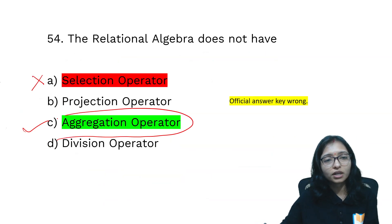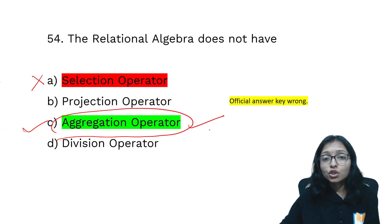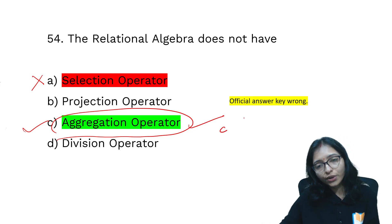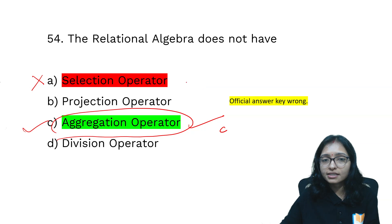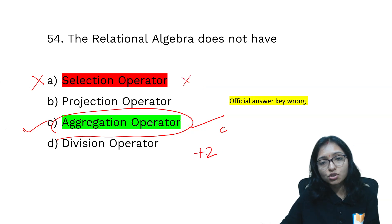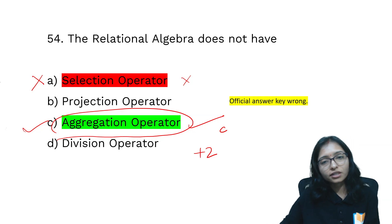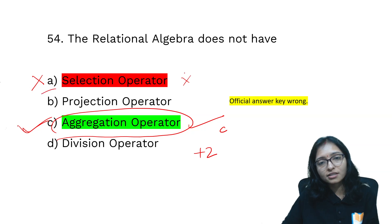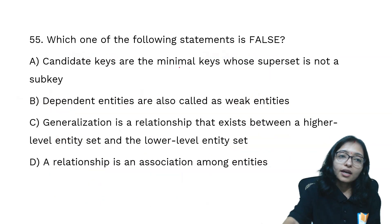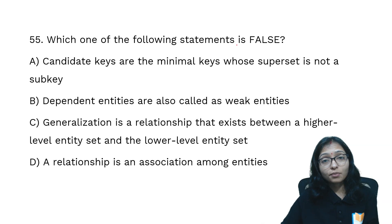There is no aggregation operation in relational algebra, so the correct answer is aggregation operator — option C. Those who marked option C can challenge the question and get plus two marks. Those who marked any other option will not get marks for this, but those who marked option C will get plus two.